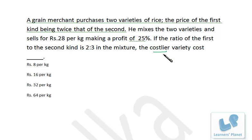See, we are to find out the price of the costlier variety, and we are given the selling price of the mixture - that's 28 per kilogram. And while he is selling the mixture at 28 per kilogram, he is making a profit of 25%.